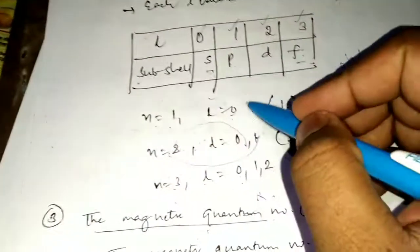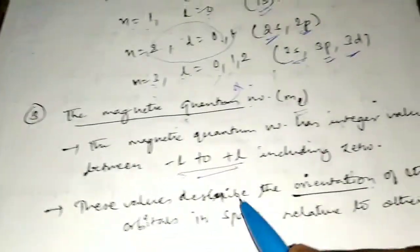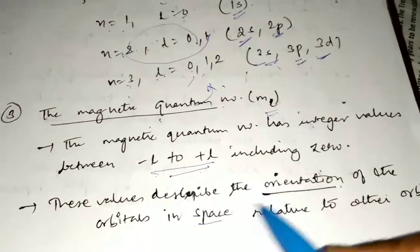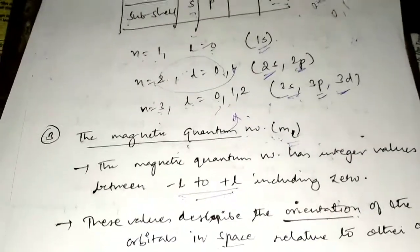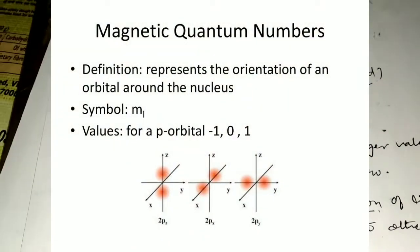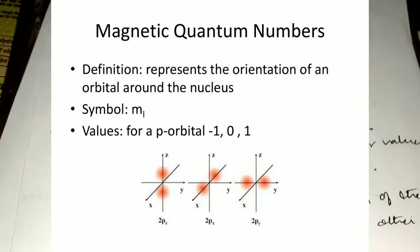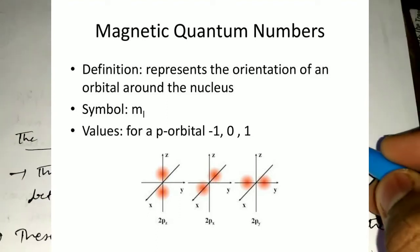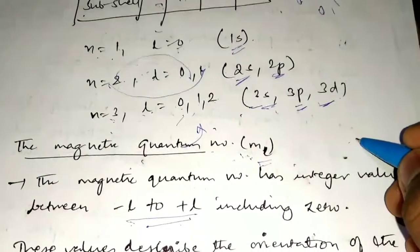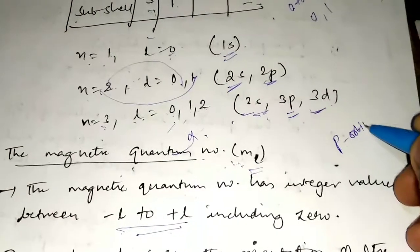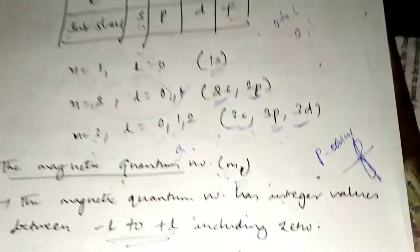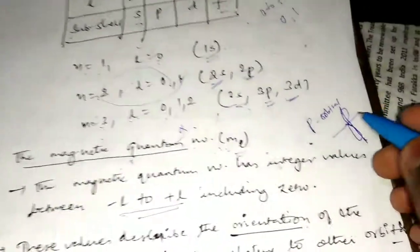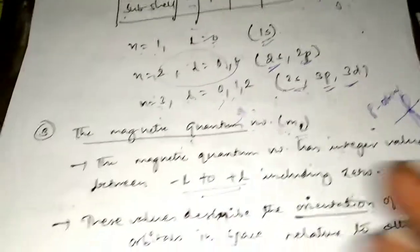The magnetic quantum number ranges from minus L to plus L. These values describe the orientation of the orbitals in space — that is, the shape and orientation of the orbitals. For example, the P orbital looks like a dumbbell shape. When L=0, ML=0, meaning S subshell has one orbital. When L=1, ML ranges from minus 1 to plus 1, giving three values, so the P subshell has three orbitals: PX, PY, and PZ.